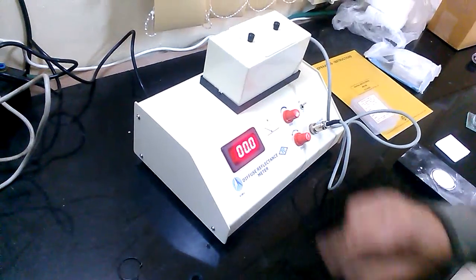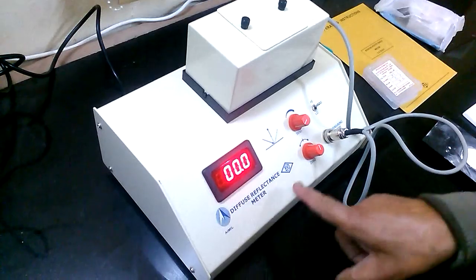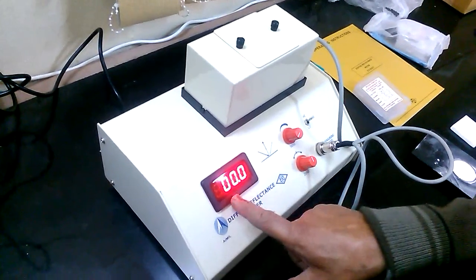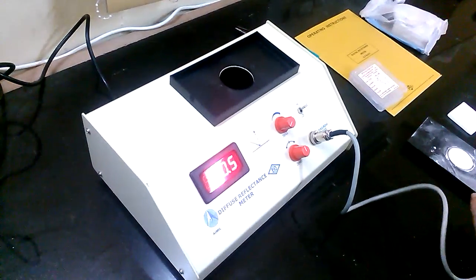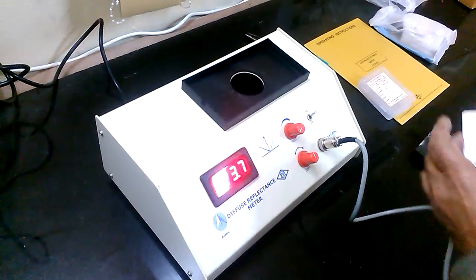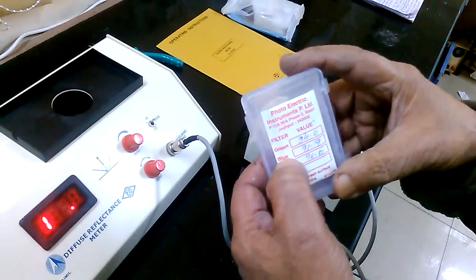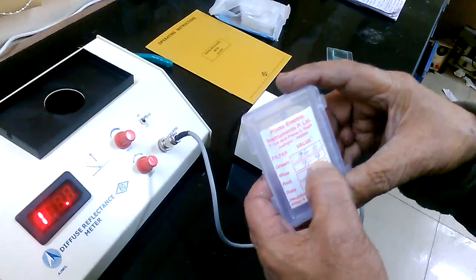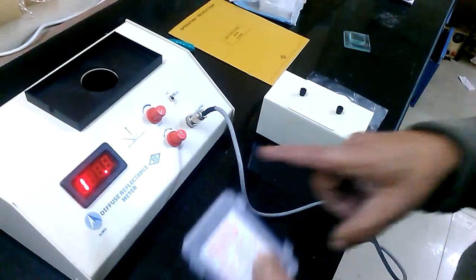As we have set with the green filter. In case there is no zero, set it again with the help of this knob. Again, put the head on the magnesium carbon block. And, note down the reading on the top of the box. The blue filter reading is 91.9. So, you have to set 91.9 with the help of this.